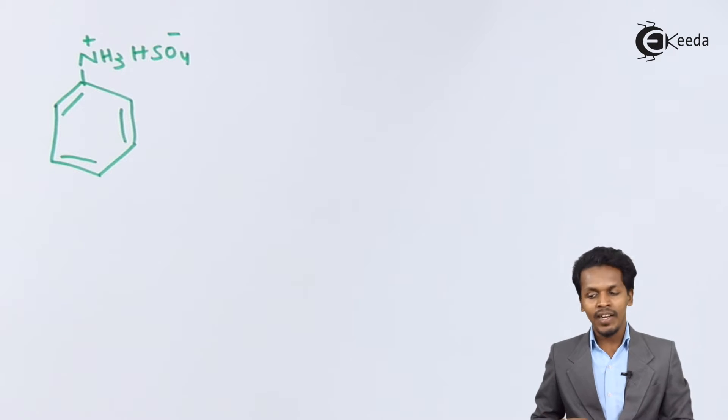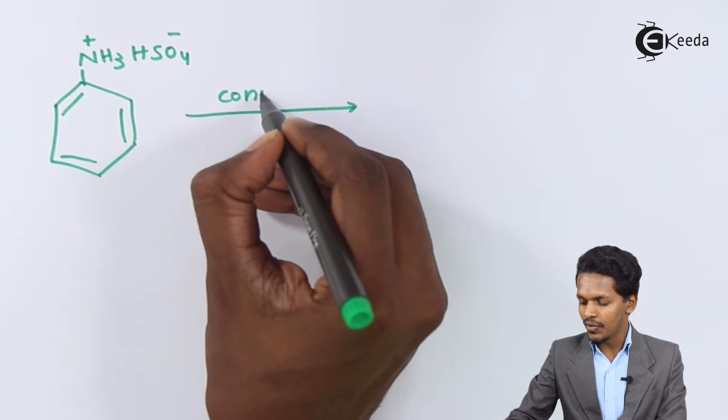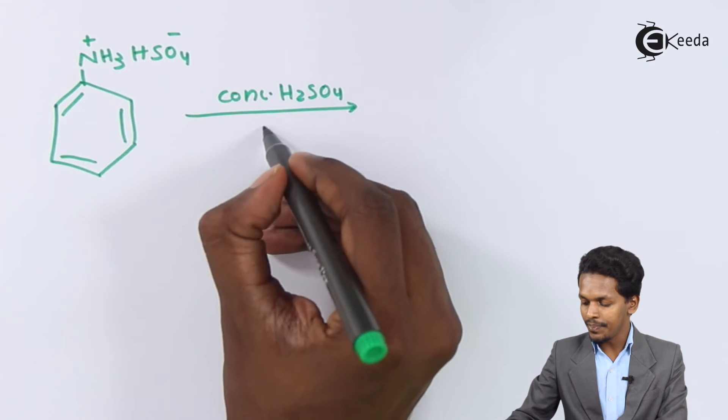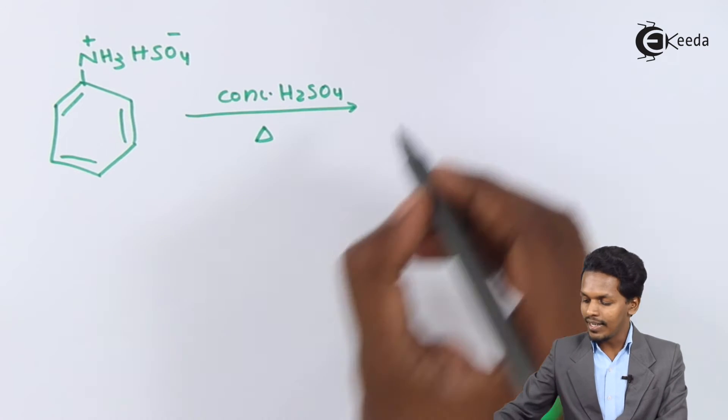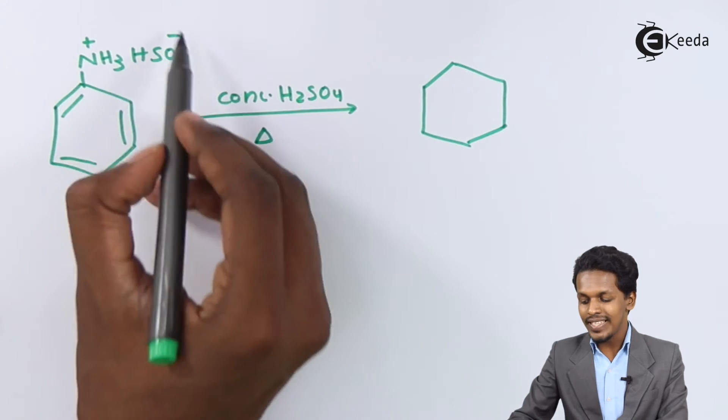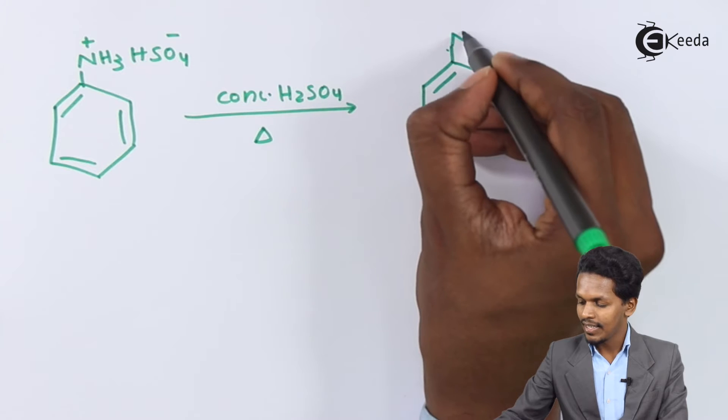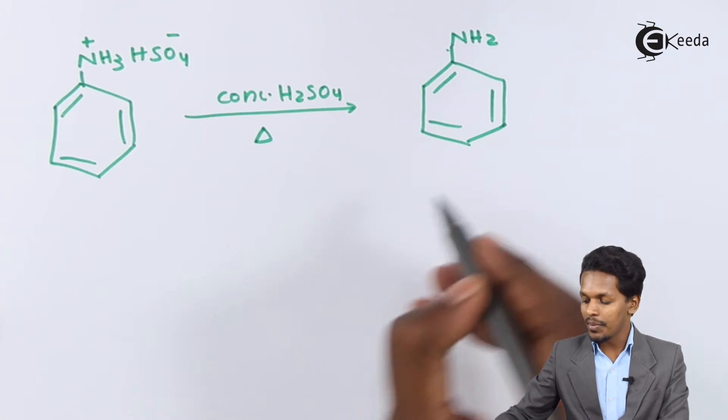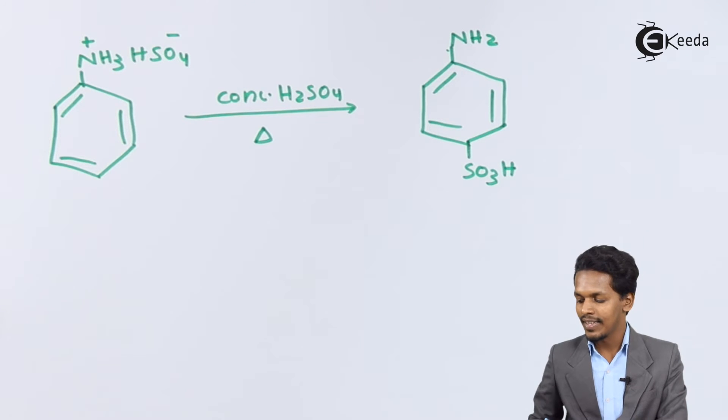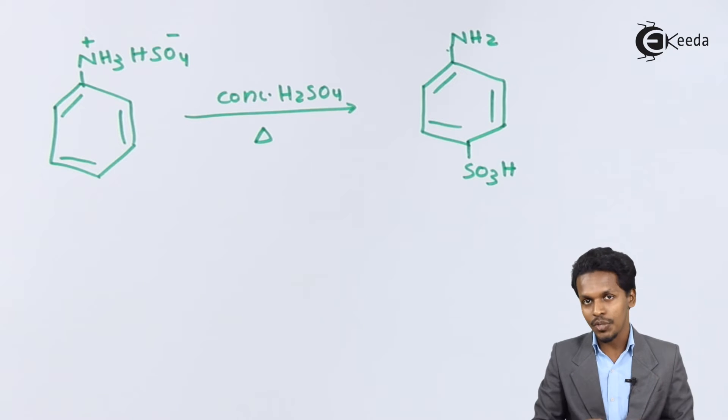The product that we have obtained will be further treated with concentrated sulfuric acid at a bit higher temperature. Now the product that we could get is this group will be converted into NH2 group while here there will be formation of SO3H. This is how we have done this sulfonation process.